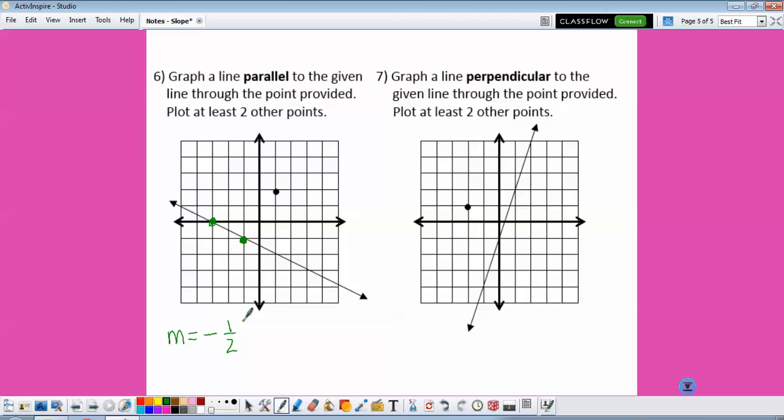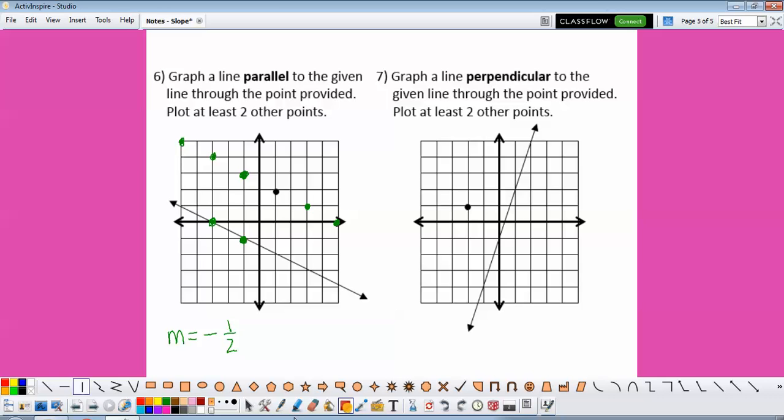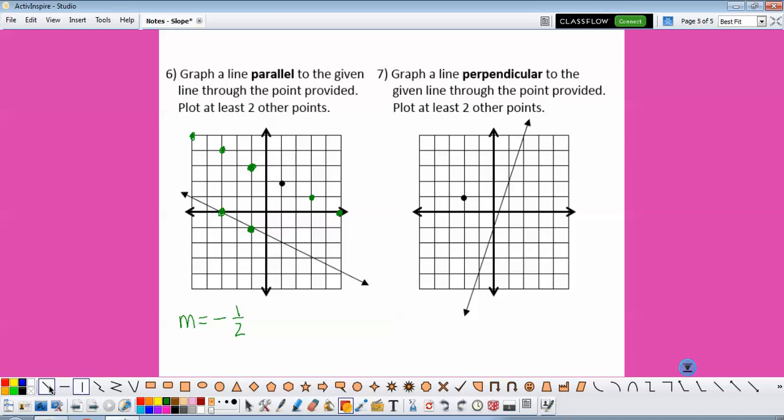Since it's parallel, we're going to use the same slope from this point. So we're going to go down 1 over 2, down 1 over 2, or up and left, up and left, up and left. And then we can connect all our dots.